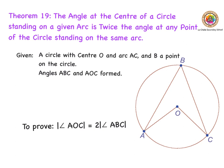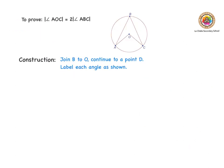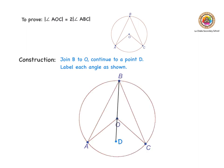To prove this, the first thing we're going to do is join B to O and continue through to a point D. When we do that, it looks something like this. Now I'm going to label each angle formed — I have six angles here and I'm going to label those now.